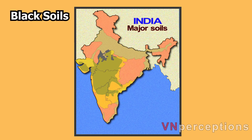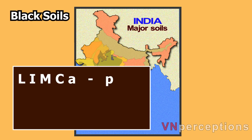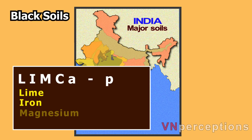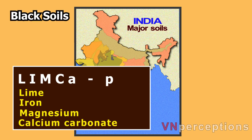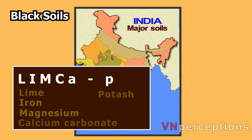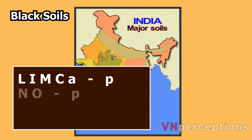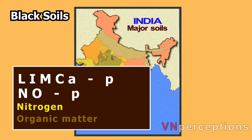Regar soil is found even in some parts of Rajasthan. This soil has a high proportion of lime, iron, magnesium, calcium carbonate and potash. It is deficient in nitrogen, organic matter and phosphorus.